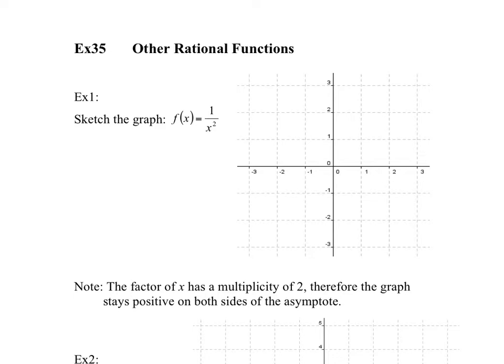Sketch the graph f(x) equals 1 over x squared. Well, x squared, by definition, is always positive, because two negatives make a positive and two positives make a positive. Therefore, 1 over x squared will be positive for all values of its graph. However, if you divide by 0 — so if x is 0 — you'll have a vertical asymptote. So there's a vertical asymptote at x equals 0.